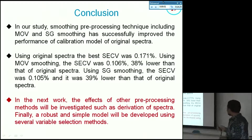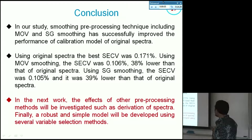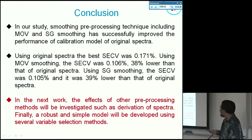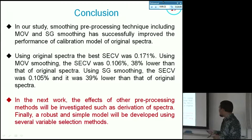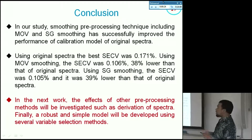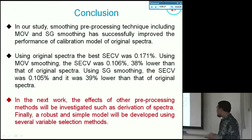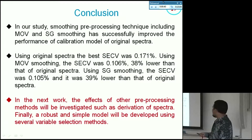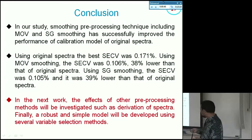In conclusion, smoothing techniques including moving average and Savitzky-Golay can improve the performance of the calibration model over original spectra. In the next work, the effect of other preprocessing methods such as spectral derivatives will also be investigated. The final target is to develop a robust and simple model using variable selection methods, and apply it via FTIR-ATR for a fast, robust, and simple measurement system for vitamin C determination. Thank you for listening.